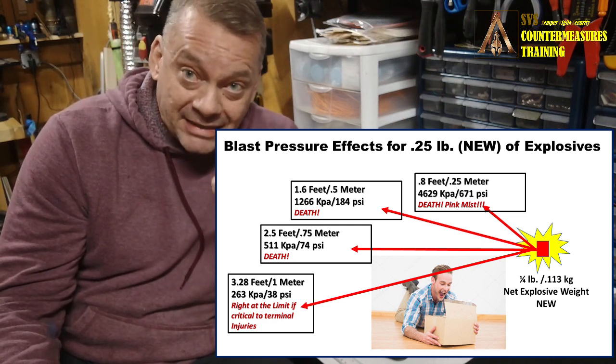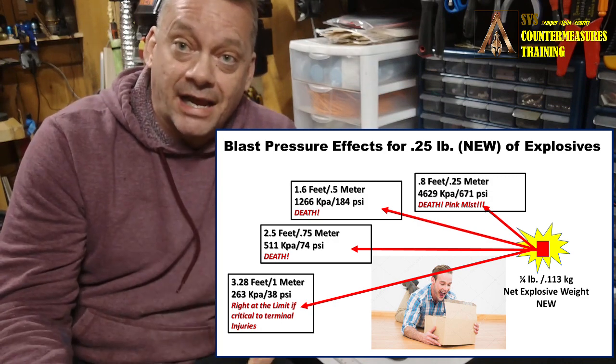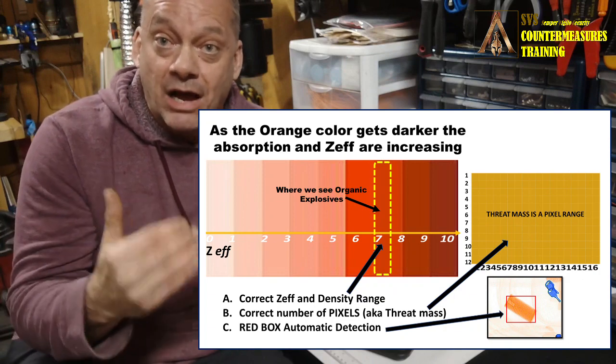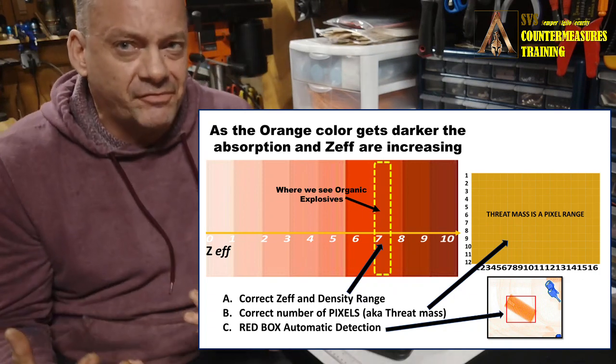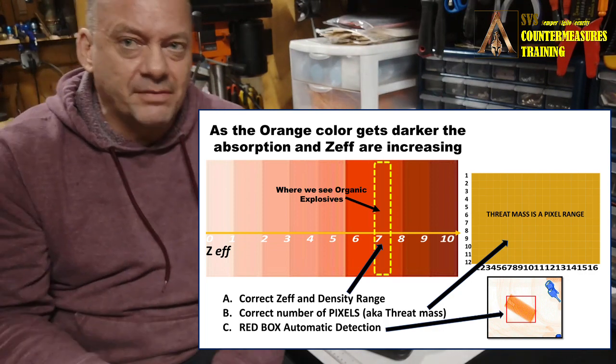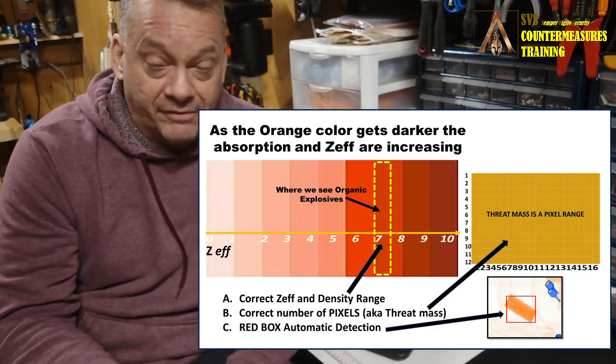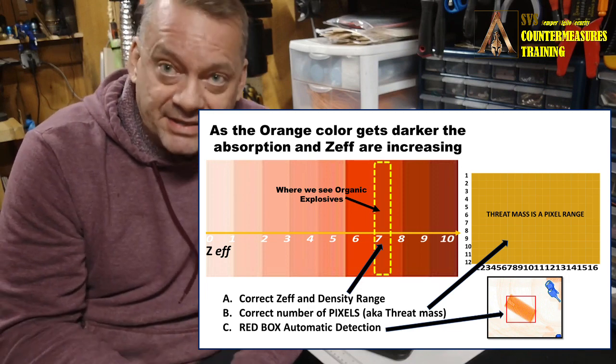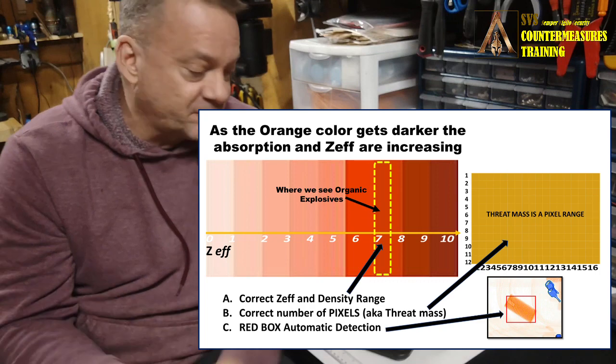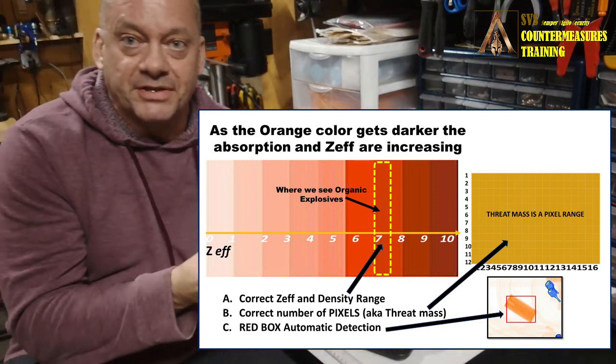A detonator by itself will blow every finger off your hand. These are high explosives — extremely powerful. This is not like fireworks or firecrackers; these are very powerful explosives. What we're going to show you is how that pixel range is actually very vague in regards to how much weight or amount of explosives could be present. It all ties into the density of the explosive material.